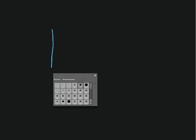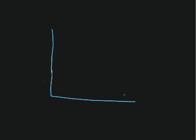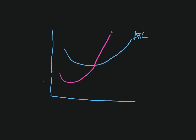Let's try that again with a new drawing, focusing just on the company. We'll draw the average total cost line — it kind of swoops up. We can also draw the marginal cost line, which swoops in a similar way and actually hits the average total cost line at its minimum point.